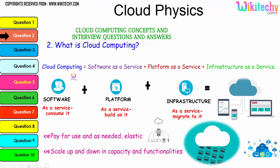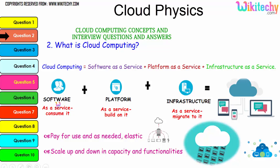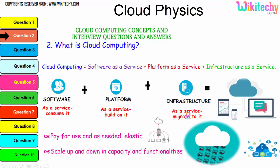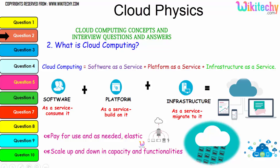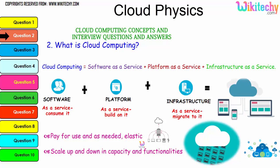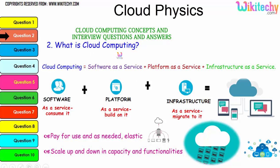Cloud computing is essentially Software as a Service, Platform as a Service, and Infrastructure as a Service. The collaboration of software, platform, and infrastructure is referred to as cloud computing. The major advantage is pay-for-use as needed and elasticity — if you need minimal storage, pay for that; if you need bigger storage, pay for that. You can scale up and down in capacity and functionalities — that's the major advantage of cloud computing.